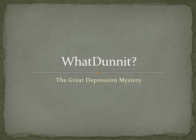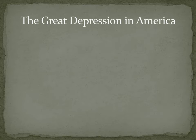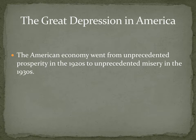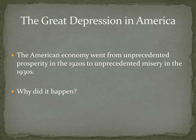You know how in the mysteries they always say whodunit? Well, this is a whatdunit — The Great Depression mystery. This was designed as a classroom activity, but of course we're not in a classroom, so you're just going to have to imagine what is happening as we go through the slideshow. The Great Depression in America: the American economy went from unprecedented prosperity in the 1920s to unprecedented misery in the 1930s. What happened? That's what we're going to try to figure out today.